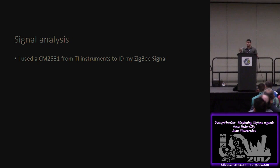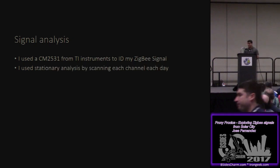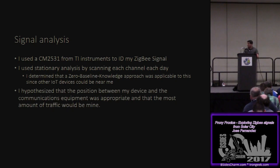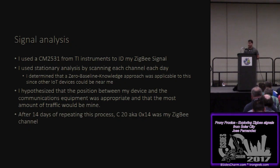I started doing signal analysis. I purchased a very small USB dongle from Texas Instruments — the CC2531 — it cost a little bit less than $50, and it's specifically built to help analysts and researchers find Zigbee communications. I used stationary analysis to identify the communication between the devices. I determined there were going to be other IoT things talking too, so I came up with the hypothesis that if I remained at a stationary position and looked at different channels over long periods, I'd be able to determine which traffic was mine just by the amount of data being transmitted.